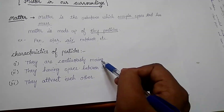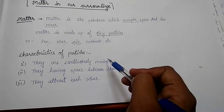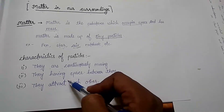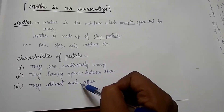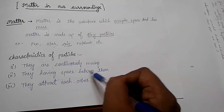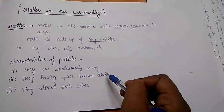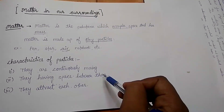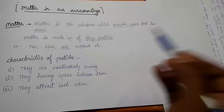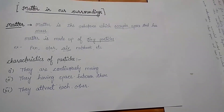These are the behaviors of the particles of matter. First, they are continuously moving. Second, they attract each other. Third, they have space between them. These characteristics are found in all types of matter.